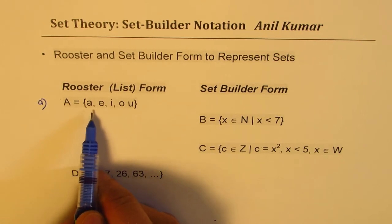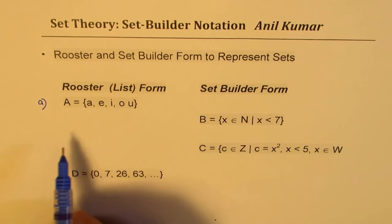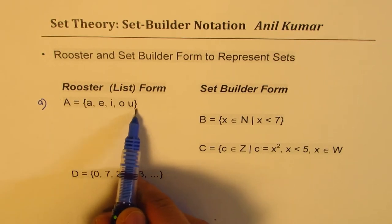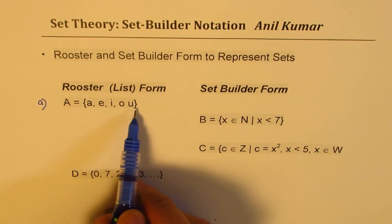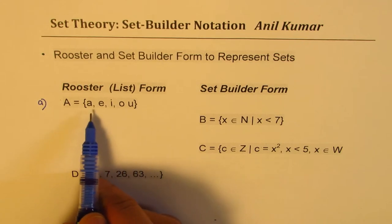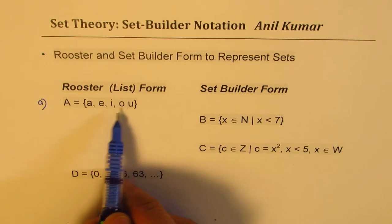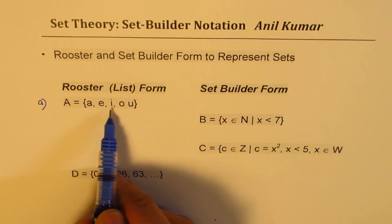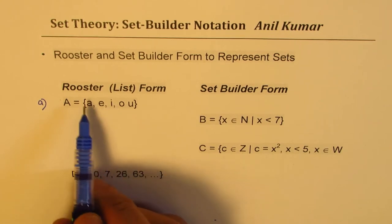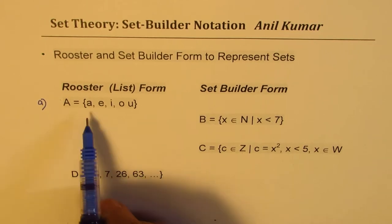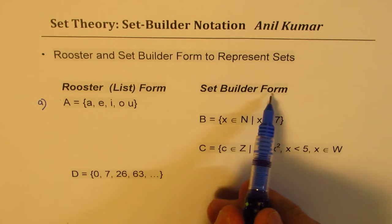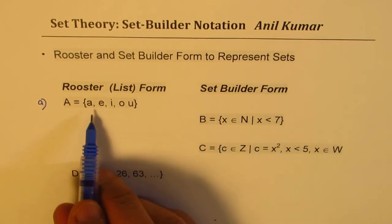Taking the first example: set A is the set of elements {a, e, i, o, u}. The brackets here indicate the set, and all the elements of the set are listed within it — a, e, i, o, u. In roster form you basically list all the elements, and therefore it is also called list form.